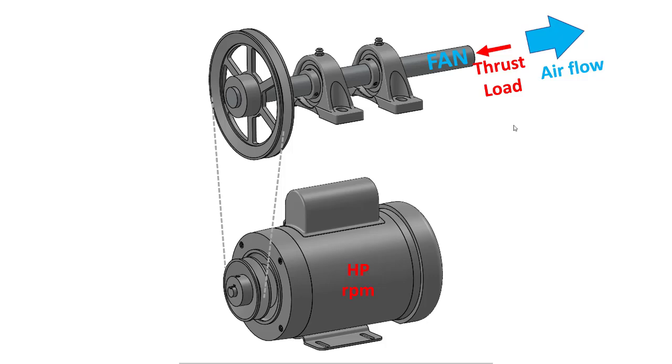Ball bearings can handle small amounts of thrust loads, but if the thrust loads become significant then we would probably need to choose some tapered roller bearings instead of ball bearings to handle the thrust loads. We are going to assume in this example that the thrust loads from the fan are small enough to be accommodated by ball bearings, and that we won't need tapered roller bearings.